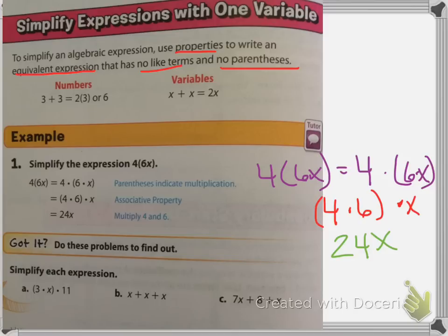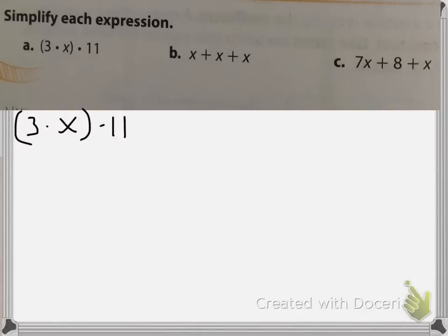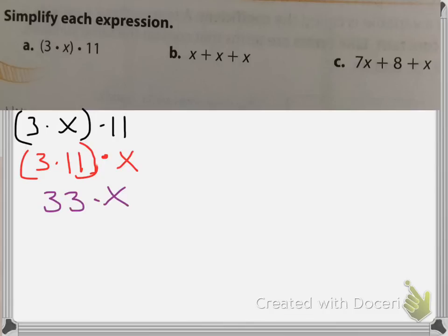Go ahead and pause the video now and work through problems A, B, and C. All right, welcome back. For A, you can see that the problem is 3 times x times 11. Again, we're just going to use the associative property here to regroup. When we regroup, we're going to have 3 times 11 times x, just like we did in that last example. We're not finished yet because we actually have to continue to simplify. 3 times 11 is 33 times x, and then our very last step gives us 33x. So for A, you should have 33x.